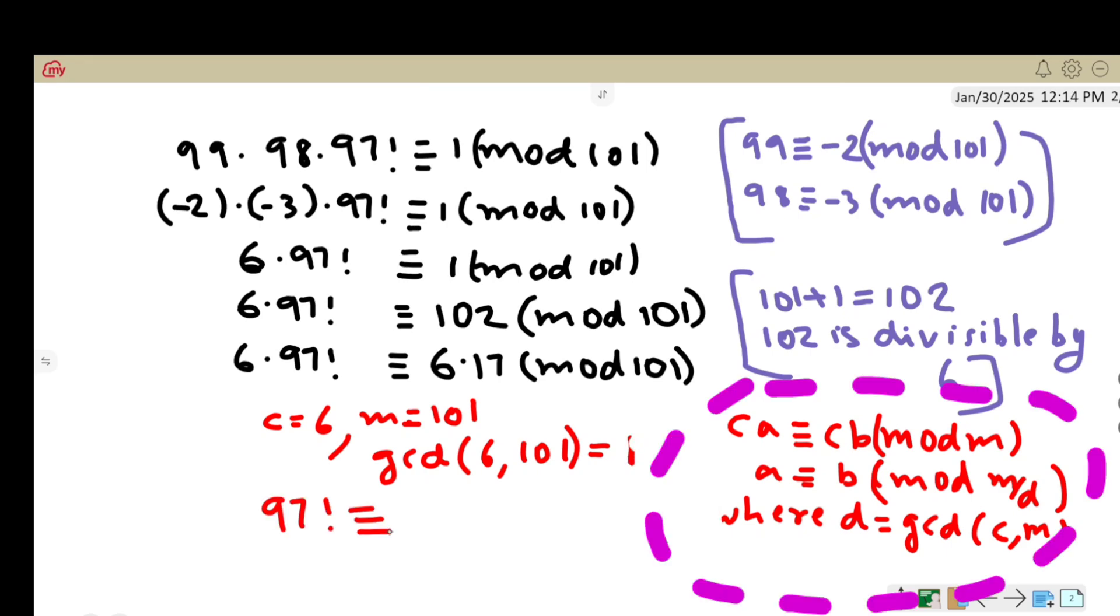So by this we get 97 factorial congruent to 17 mod 101 divided by 1. That is, 97 factorial congruent to 17 mod 101.